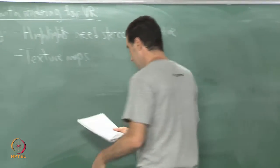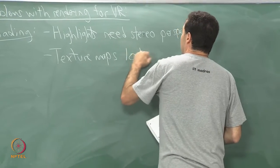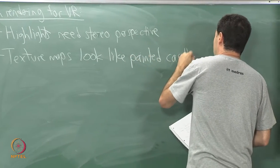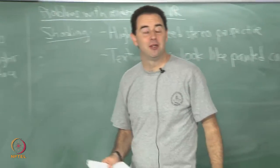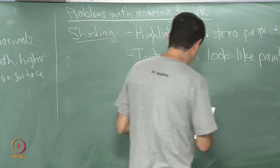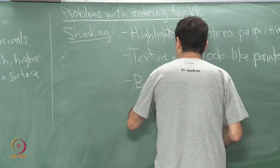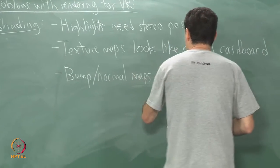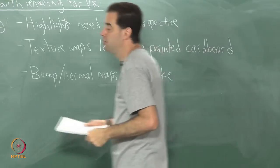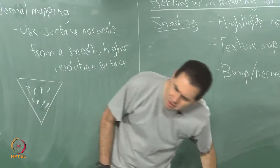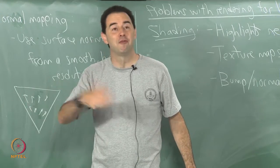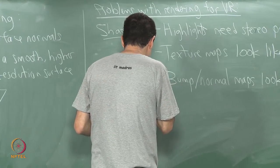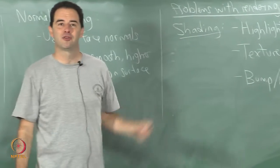Texture maps look like painted cardboard or painted walls — you can tell the texture is artificial because you can change your viewpoint and you have stereo. Bump maps and normal maps also look fake. You can very easily change your perspective and say 'no, that is wrong.' It is easy to determine that these are not done correctly. These are some well-known tricks that in virtual reality do not work so well.